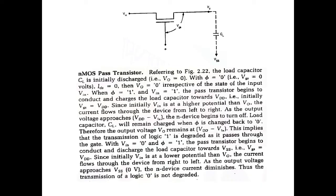As the output voltage approaches VDD minus V-th (the threshold voltage), the N device begins to turn off. Since it is an N device, it begins to turn off. The load capacitor will remain charged when phi is changed back to 0. Therefore, the output voltage V-out remains at VDD minus V-th. This implies that the transmission of logic 1 is degraded as it passes through the N-pass transistor gate.